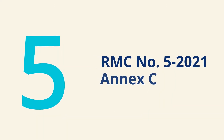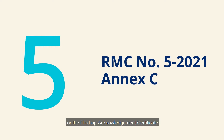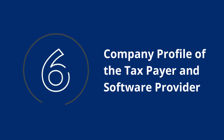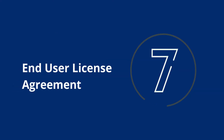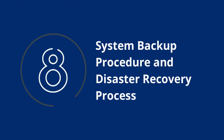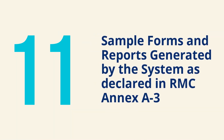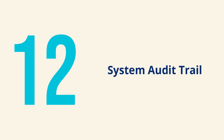RMC No. 5-2021, Annex C, or the Filled Up Acknowledgement Certificate. Also needed are the Company Profile of both the taxpayer and the software provider, User License Agreement, System Backup Procedure and Disaster Recovery Process, System Data Migration, System Process Flow, Sample Forms and Reports Generated by the System as declared in RMC Annex A3, and System Audit Trail.